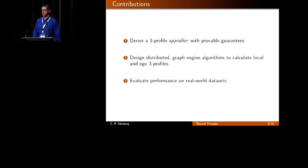Our contributions are as follows. We derive a three profile sparsifier, an estimator on a sparsified version of a graph with provable guarantees. Second, we design distributed algorithms that calculate the local and ego three profiles. You can compute the global four numbers by calculating the local three profile and then performing a reduce on all vertices and scaling appropriately. Finally, we implement these algorithms on several hardware platforms and test their performance on real graphs.